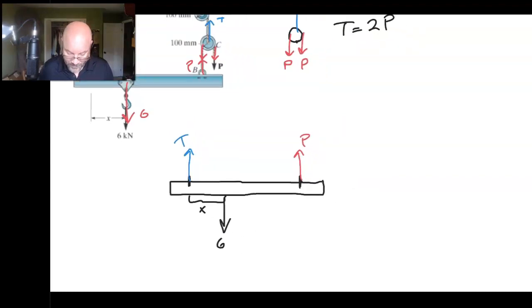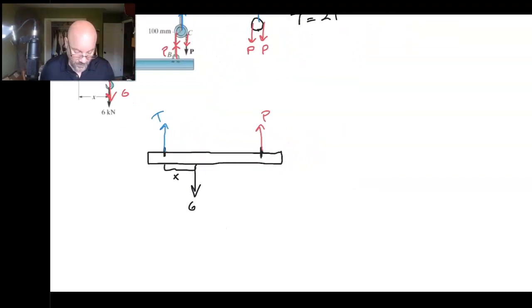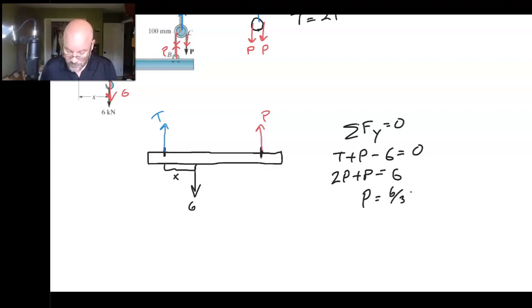And so we can write down one relationship for this thing already. If we look at our vertical information. So I've got T plus P minus 6 is equal to 0. But we've already learned from above that T is actually 2P. And so P is actually 2.